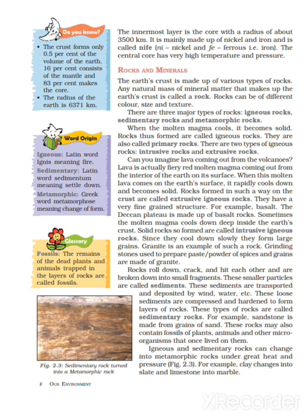When lava solidifies on the surface, it forms extrusive igneous rock. For example, basalt is made up of this type of rock. Sometimes molten magma cools deep inside the earth — such rocks are called intrusive rocks. Since they cool down slowly, they form large grains. Granite is an example, and grinding stones used to prepare paste or powder of spices and grains are made of granite.